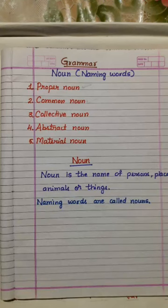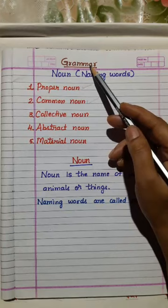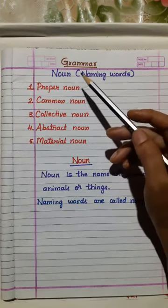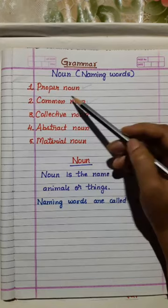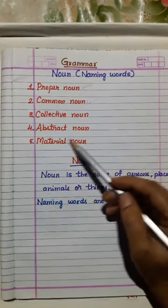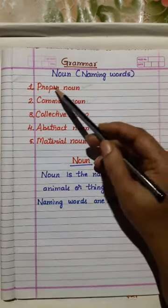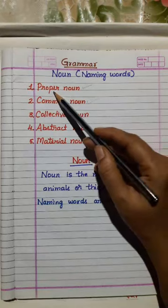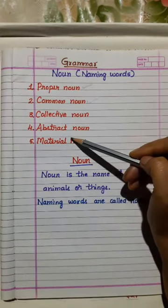Hello students, today we are going to learn nouns and their types in grammar. There are different types of nouns: proper nouns, common nouns, collective nouns, abstract nouns, and material nouns. In standard second, we have only two types of nouns — proper noun and common noun. The remaining types you will learn when you go to higher classes.